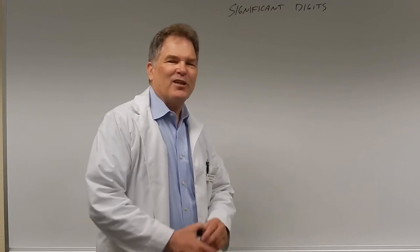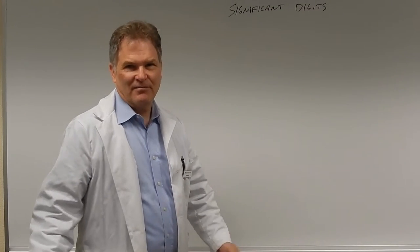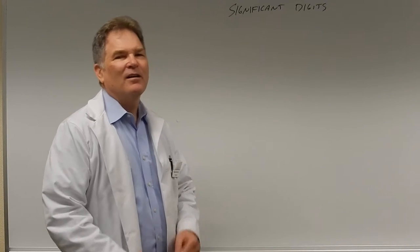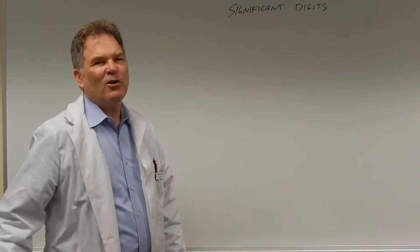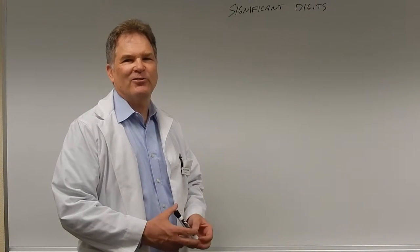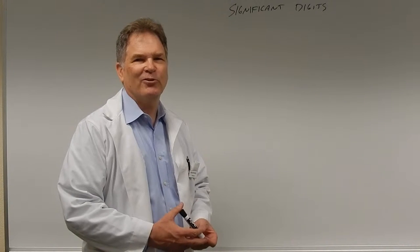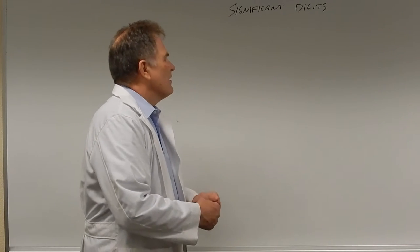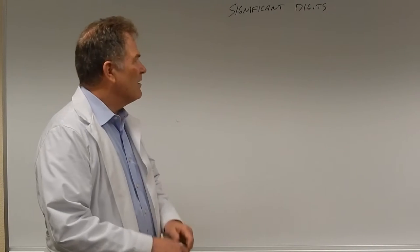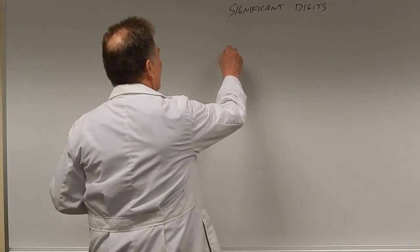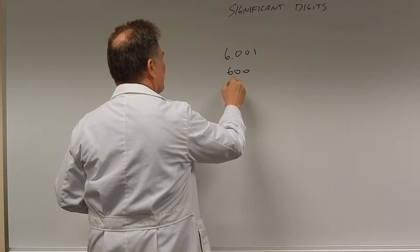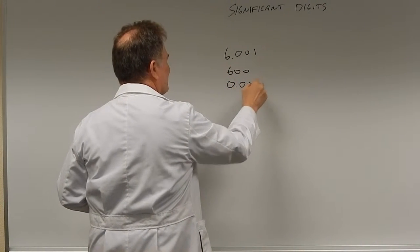Let's talk about the types of questions that come up on tests regarding significant digits. The number one question is: how many significant figures are in a certain number? For example: 6.001, 600, or 0.002. There are all sorts of different rules to handle these cases.